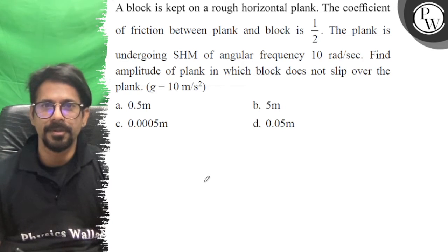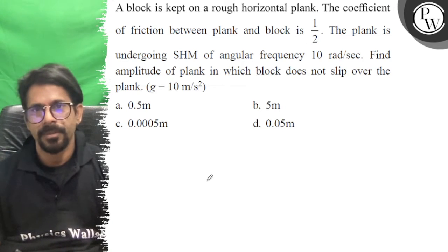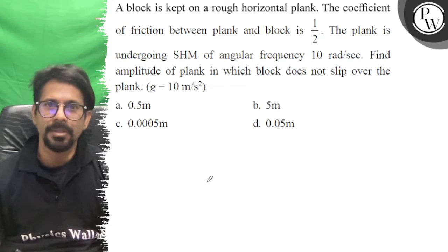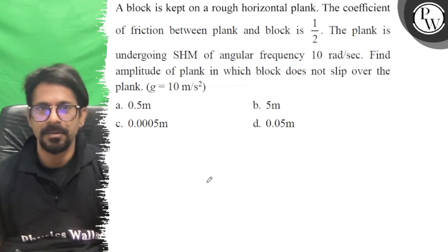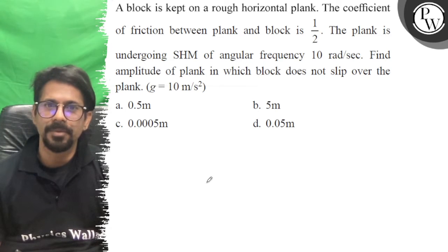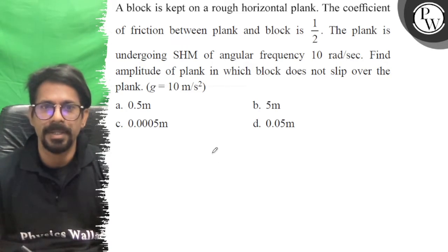Hello, let's see this question. A block is kept on a rough horizontal plank. The coefficient of friction between plank and block is 1/2. The plank is undergoing SHM of angular frequency 10 rad/sec. Find the amplitude of plank in which the block does not slip over the plank.